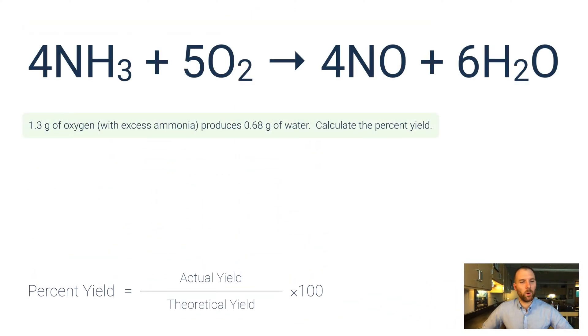This problem says 1.3 grams of oxygen with excess ammonia. Now that excess ammonia piece means that this is your excess reactant, and this is your limiting reactant. In these types of problems you always want to use the limiting reactant because this stuff's going to run out first, and so this is what's going to be the only thing you can use to calculate the accurate amounts of products you'll be able to form. So it says 1.3 grams of oxygen produces 0.68 grams of water. Now this is experimentally, so this is going to be our actual yield—this is going to go up on top. But what we're missing is the theoretical yield. In other words, if I'm putting in 1.3 grams of oxygen, using stoichiometry we can calculate how much water we should expect to form.